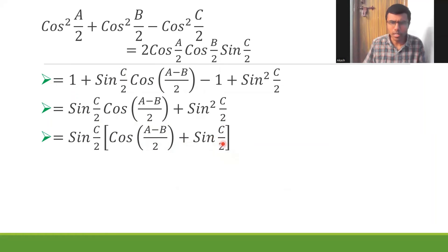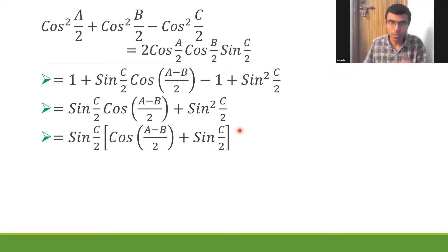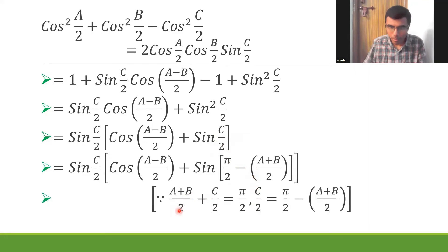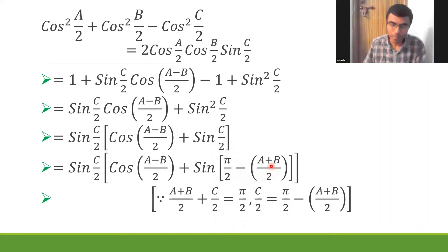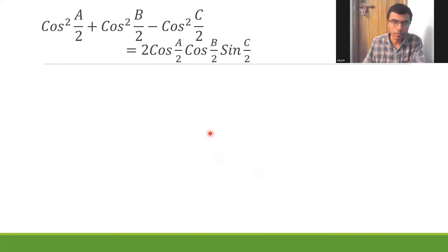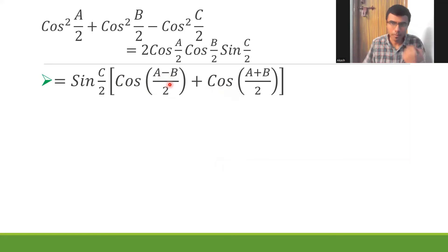Now I have (a - b)/2 inside, and I want to replace sin(c/2) with something in terms of a and b. From our condition, c/2 = π/2 - (a + b)/2. So sin(c/2) = sin(π/2 - (a+b)/2) = cos((a+b)/2), which I split as cos(a/2 + b/2).